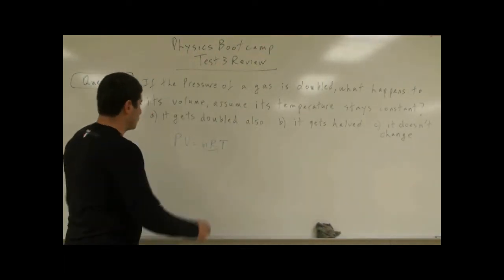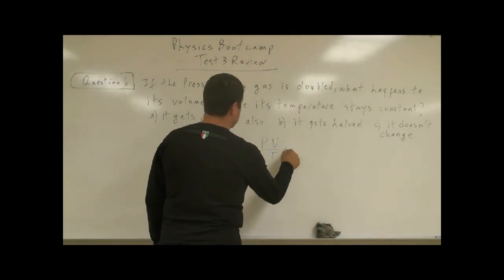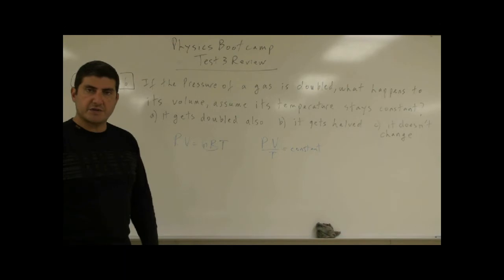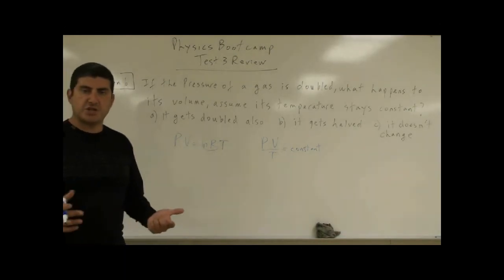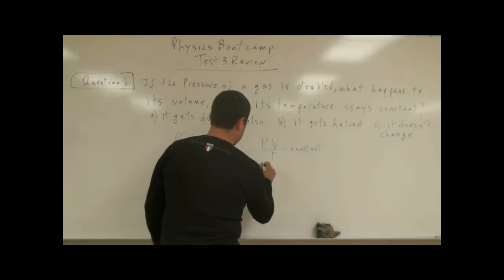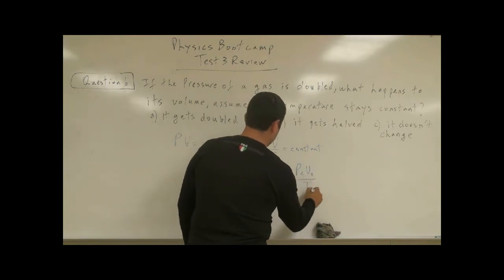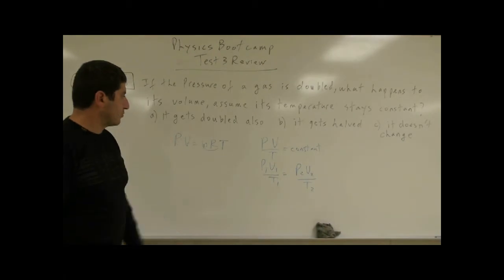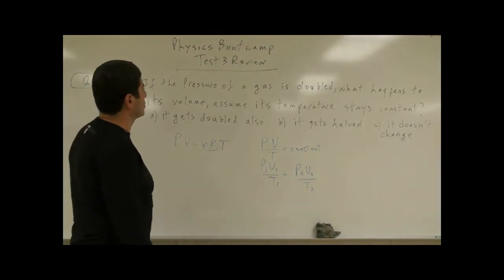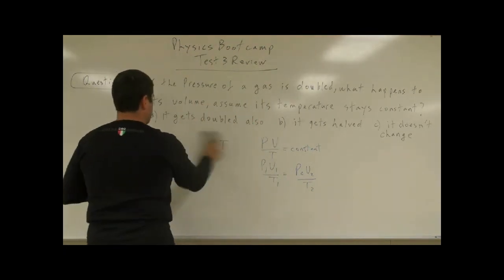Since n and R are constant, all we need is PV over T, which equals a constant. So if pressure, volume, or temperature is changing, we write: P1 V1 over T1 equals P2 V2 over T2. The product of pressure and volume divided by temperature must stay constant. In this case, the pressure is being doubled.